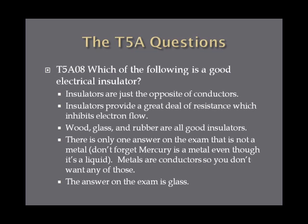Which of the following is a good insulator? Insulators are just the opposite of conductors — they provide a great deal of resistance which inhibits electron flow. Wood, glass, and rubber are all good insulators. On the exam, look for the answer that is not a metal. Don't forget that mercury is a metal, even though it's a liquid, so metals are good conductors and insulators are not. The answer on the exam is glass.